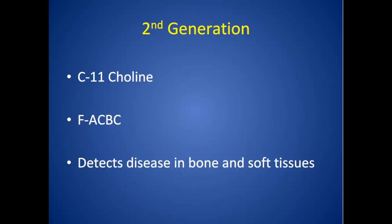The beauty of both FACBC and C11 choline — and there are other agents like C11 acetate as well — is that they detect disease in both bone and soft tissues. So instead of ordering a CT scan and a bone scan separately, you can just get this one scan and detect disease at both sites.